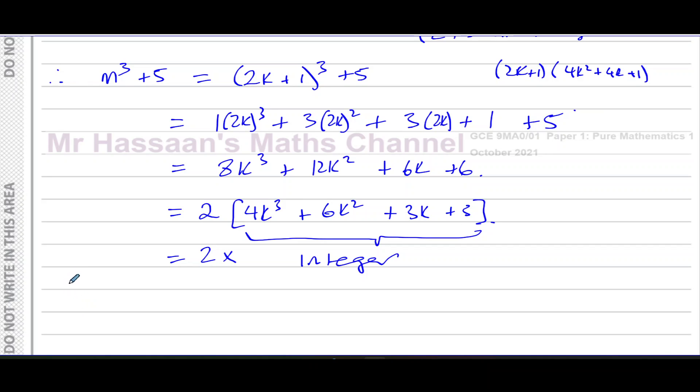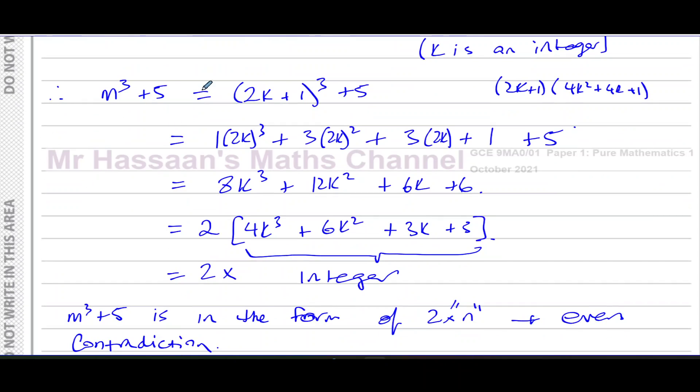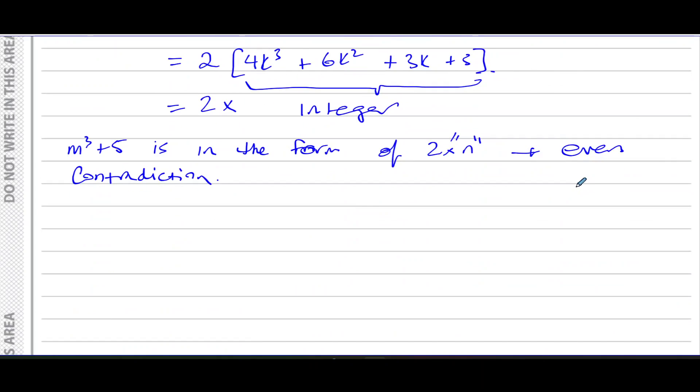That is now a number which we know for sure is even because this is 2 multiplied by all of this together is, of course, going to be an integer, 2 times an integer. So this is of the form 2 times n. So we can say m³ + 5 is in the form of 2 times n, which means it must be even. Which is a contradiction. It's a contradiction because we stated that if m is odd, then m³ + 5 would also be odd. But when m was odd, m³ + 5 is even, contradiction,